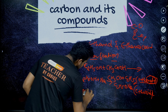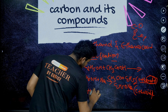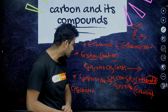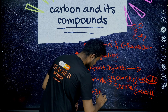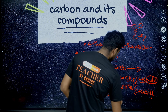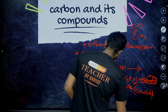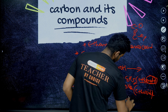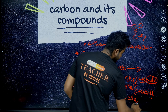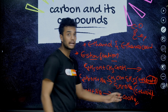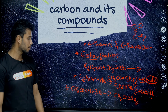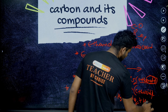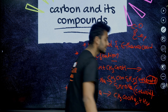Another reaction: ethanoic acid with sodium metal. What does it yield? It yields an ester compound with the release of hydrogen gas. The release of hydrogen gas here is a very important point to remember.